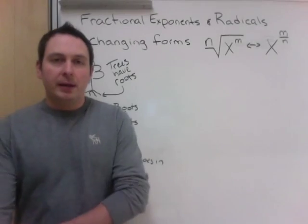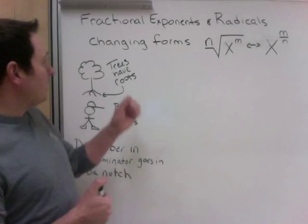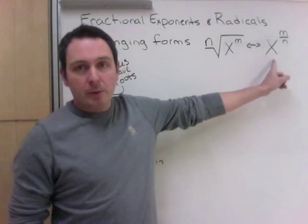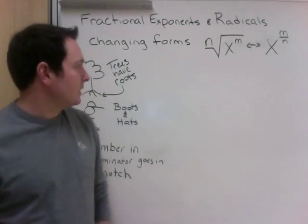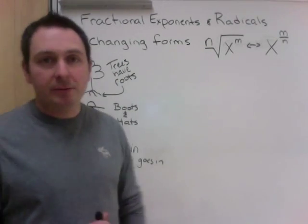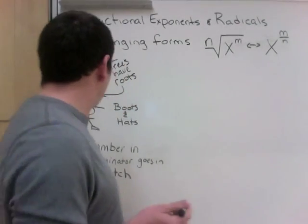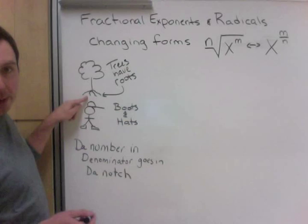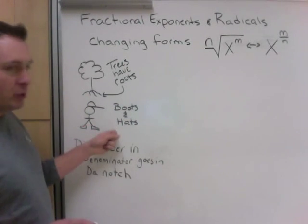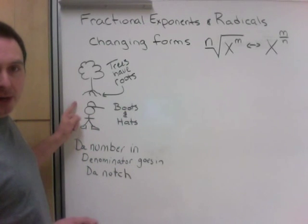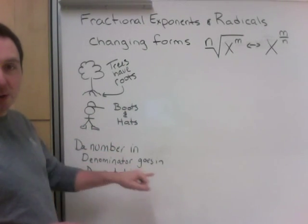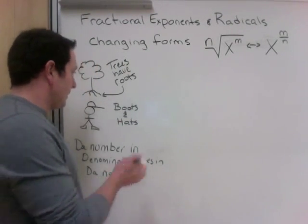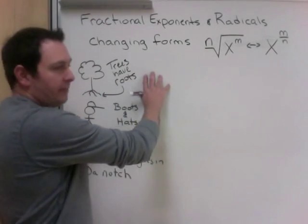The first learning intention is changing forms — either using roots into exponents or backwards. I'm going to give you three ways to do this; you just have to remember one of them. First, there's a tree, and trees have roots. Second, boots and hats. Third, the number in the denominator goes in the notch. These are three ways I've seen from different teachers.